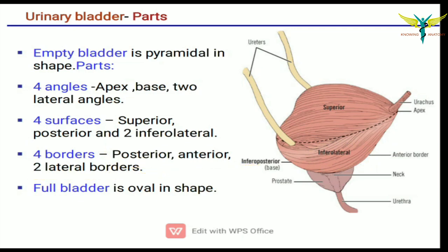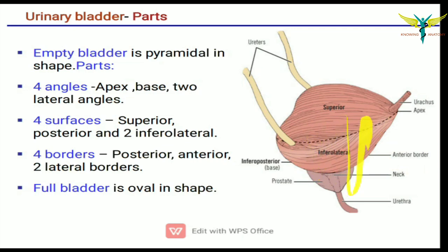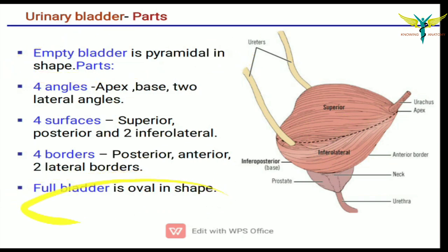You can note the anterior border here. This is the posterior border, and this whole surface border is the lateral border. As the empty bladder is pyramidal in shape, the full bladder is oval in shape. You should remember the shapes.